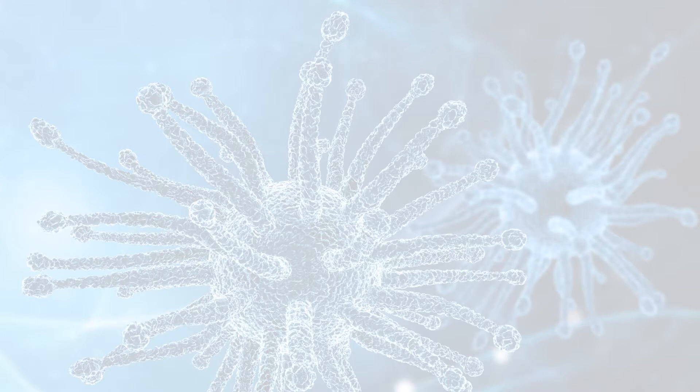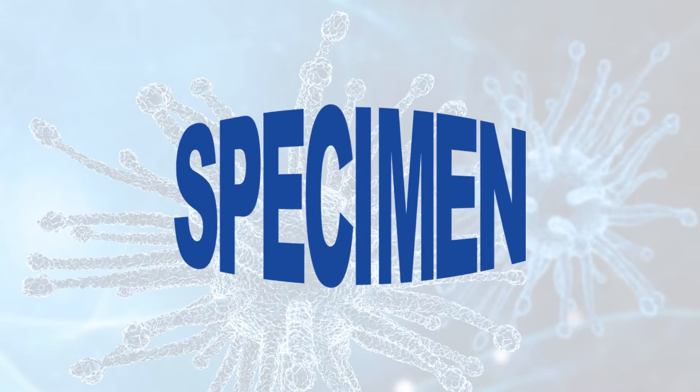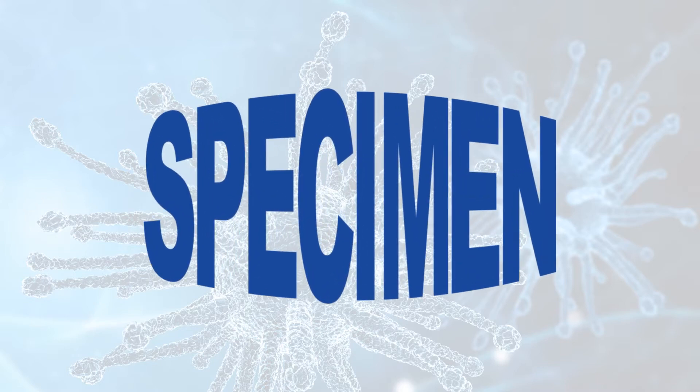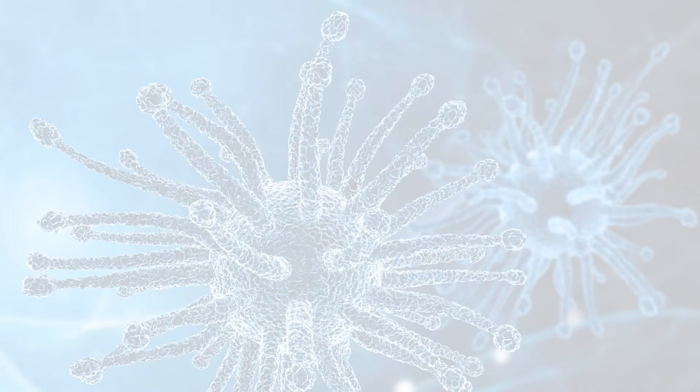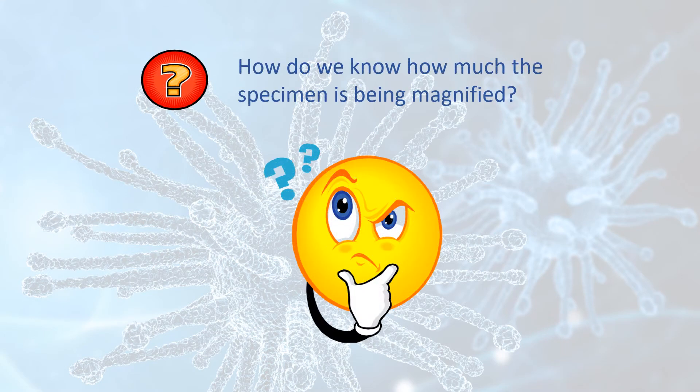When using a microscope to look at a specimen, the image we see makes the specimen look much larger than it actually is. I mean, that's the whole point of using a microscope, isn't it? But as scientists, we always want to have an accurate view of the world, so it's helpful for us to know how much a specimen has been magnified. If we know that, we can get a sense of how big the specimen actually is in real life.